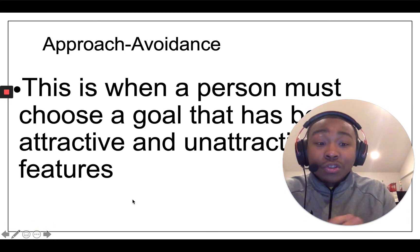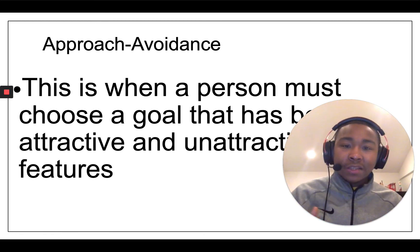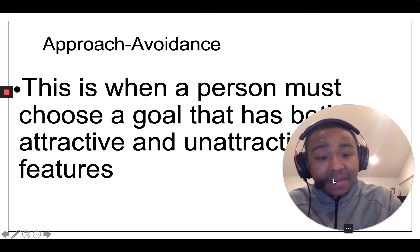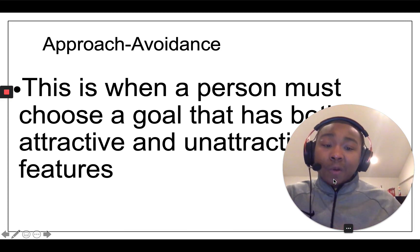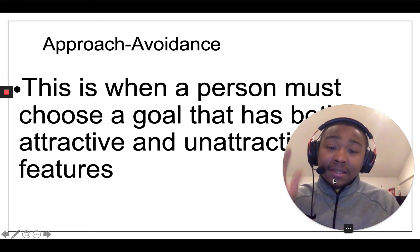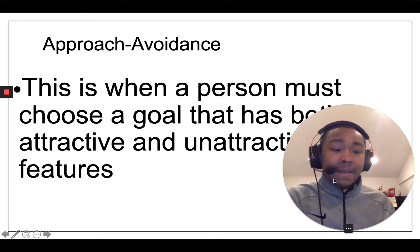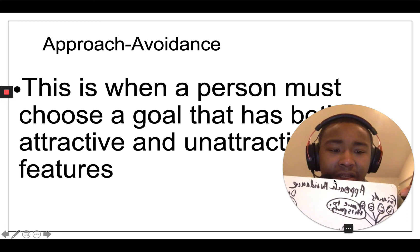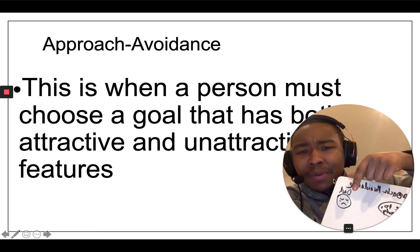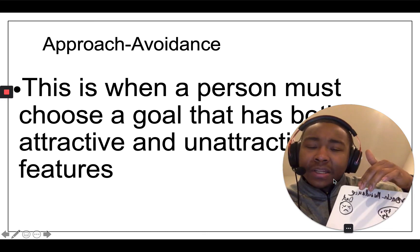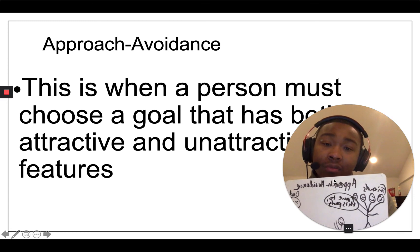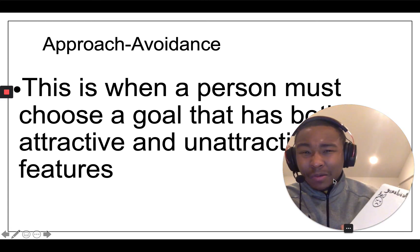Then we have approach-avoidance. If you think of the previous two — approach is a goal with positive attributes, and avoidance is something unattractive — approach-avoidance means one thing has both a positive and a negative to it. Here's the example: your friends say, 'Hey, let's go to this party' — that's the approach. But your dad would be really, really sad if you went to that party; he wouldn't approve of you being there with those people — that's the avoidance. You have to make a choice knowing you'll either upset your friends or disappoint your dad.